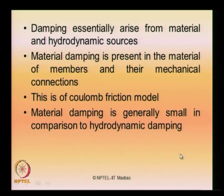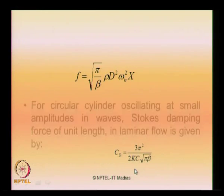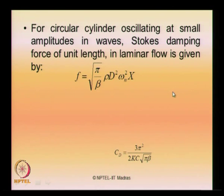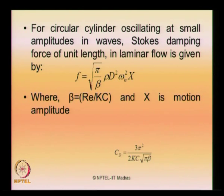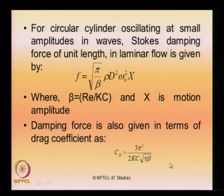Material damping is generally small in comparison to hydrodynamic damping, because hydrodynamic damping effects can be significantly large compared to material damping. There are several sources of hydrodynamic damping. For a circular cylinder oscillating at small amplitude in waves, the Stokes damping force per unit length in laminar flow is given by a simple equation, where beta is a ratio of Reynolds number to Keulegan-Carpenter number and x is the motion amplitude. Other researchers also handle damping force in terms of drag coefficient, modifying it to include hydrodynamic damping, where K_c is the Keulegan-Carpenter number and beta is the ratio of Reynolds number to Keulegan-Carpenter number.